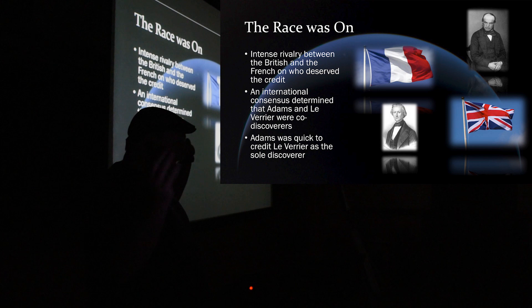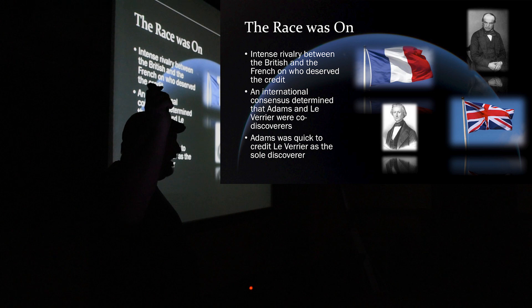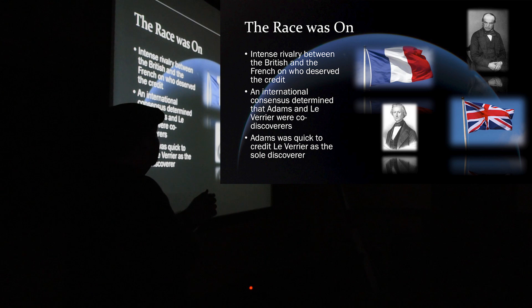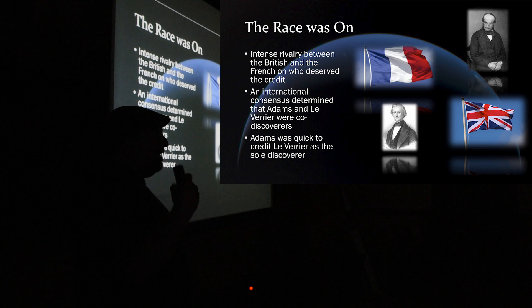All right, so, the cat's out of the bag. Neptune's discovered. Some astronomers in England, the Challis in England, is trying to say, we discovered it. And, of course, Le Verrier is saying that we discovered it in conjunction, or in collaboration with the Berlin Observatory. So, there was an intense rivalry between the French and the English. So, an international consensus said, hey, you know what, they both get credit of discovering this.